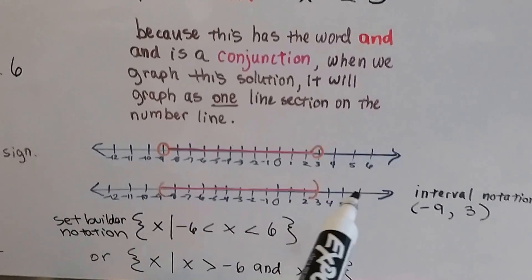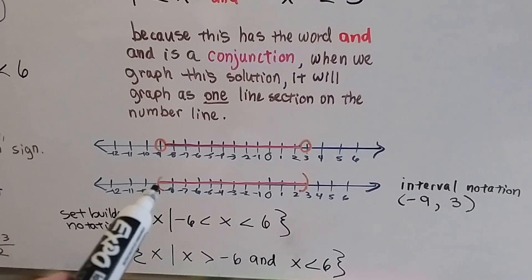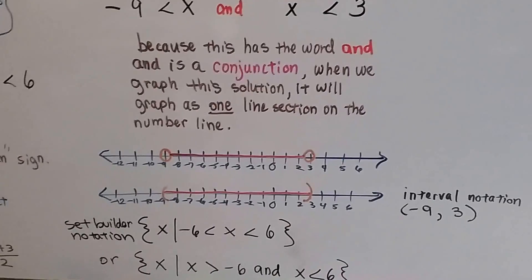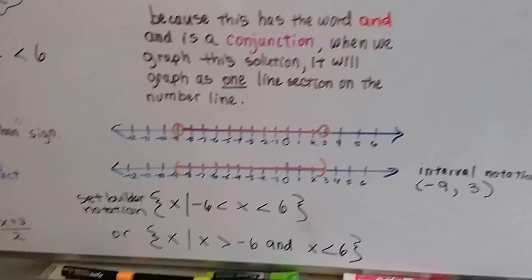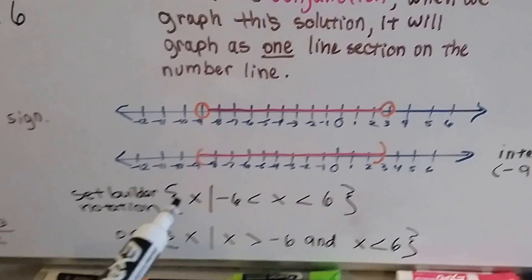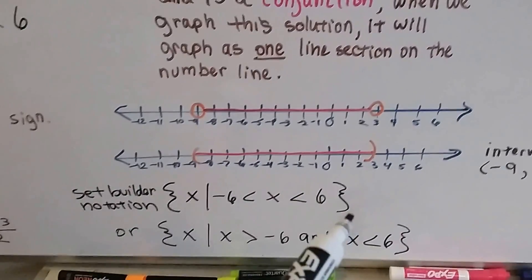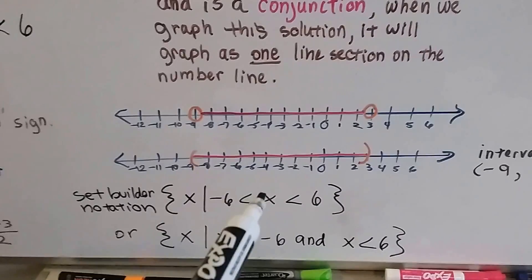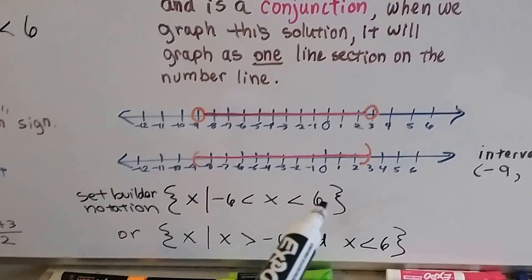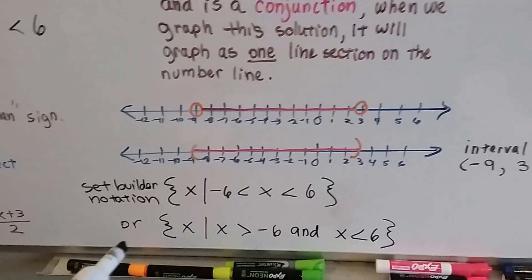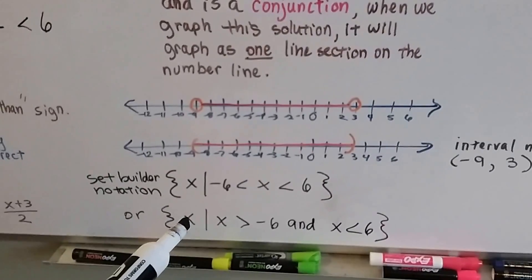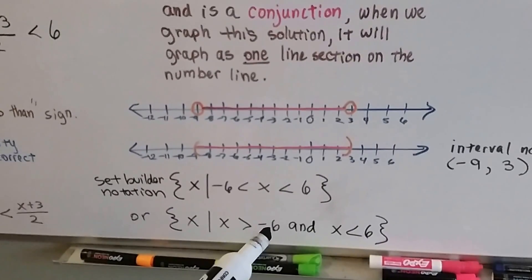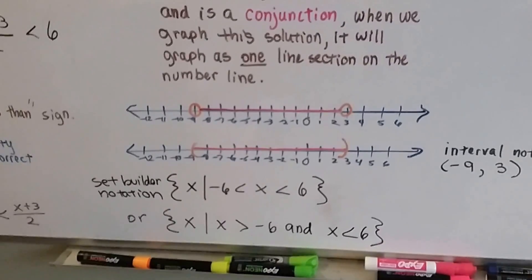And if we did it in interval notation, it would be parentheses negative 9 to show that it's not included and parentheses 3 to show the 3 is not included. In set builder notation, we would have our set braces and we could put an x and write it in the combined form with the x in the center so that x is greater than negative 6 and x is less than positive 6. Or we could write it in set builder notation as the set of all x such that, that's the bar, x is greater than negative 6 and x is less than negative 6.